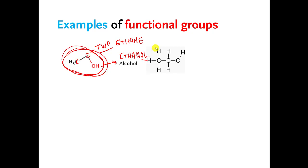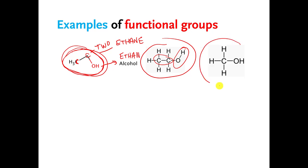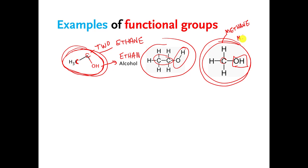This is also another drawing of ethanol — the expanded structure — there are my two carbons and my alcohol functional group. What do you think the name of this molecule is? It has an alcohol functional group and one carbon. One carbon is related to methane, but this isn't methane — it's methane with an alcohol group, so it is called methanol. Methanol is the booze that if you drink it will make you go blind and possibly kill you, so please don't do that.